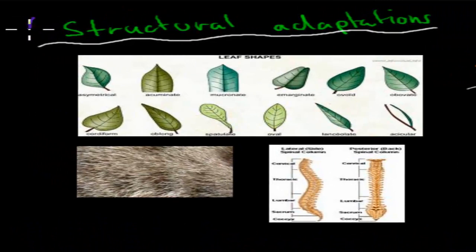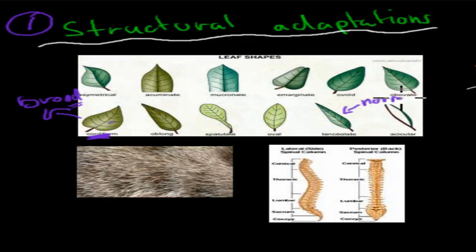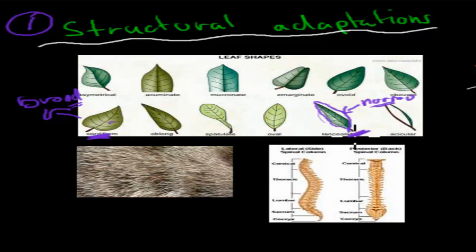Structural adaptations are to do with physical structures. Leaves are a great example. Pine trees have broad leaves because broad leaves allow them to absorb more sunlight — and pine trees don't get much sun, so they need to absorb more. Whereas eucalyptus trees have narrow leaves. That's a structural adaptation allowing them to absorb less sunlight, because they're in a really warm environment and need a way to cool down — thin leaves give them just enough sun but not too much.